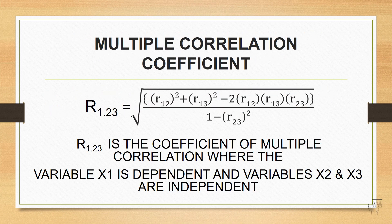The multiple correlation coefficient is symbolized by capital R. In the following case, it is the multiple correlation coefficient wherein variable 1 (x1) is the dependent variable and variables 2 and 3 (x2 and x3) are the independent variables. We can calculate the coefficient of multiple correlation using the given formula.